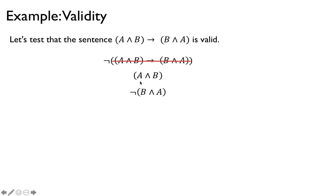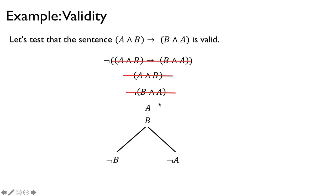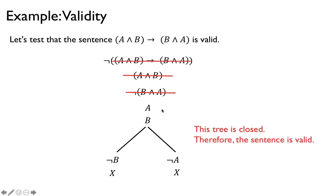Now we resolve the remaining sentences. 'A and B' gives us a and b along the same path. 'Not (B and A)' by De Morgan's Law gives 'not-B or not-A', which is a branching. So we have two paths: one with a, b, and not-B — which contains b and not-b, a contradiction — and one with a, b, and not-A — which contains a and not-a, a contradiction. Both paths are closed, so the whole tree is closed; therefore the sentence is valid.